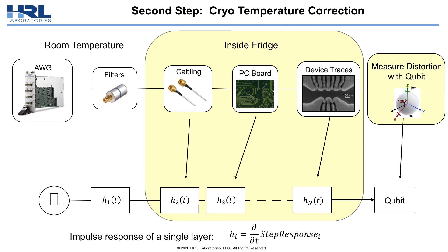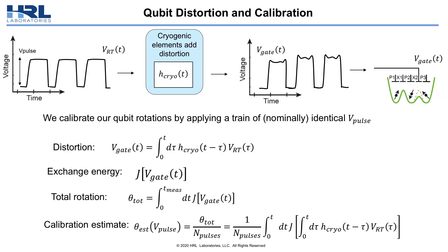Inside our fridge we have cabling, PC boards, and device traces on the qubit chips themselves, and we want to correct for the total distortion of this part of our system. This almost requires that we use our qubits as our distortion measurement system. We can use a technique from normal qubit control experiments — a calibration routine — in order to extract a cryogenic distortion kernel.